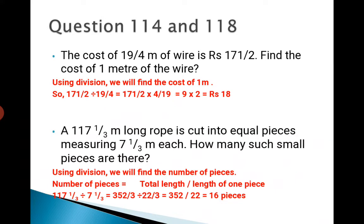Next question 118: A 117 1/3 meter long rope is cut into equal pieces measuring 7 1/3 meters each. How many such small pieces are there? Using division again, we will find the total number of pieces by total length divided by the length of one piece. So 117 1/3 divided by 7 1/3.